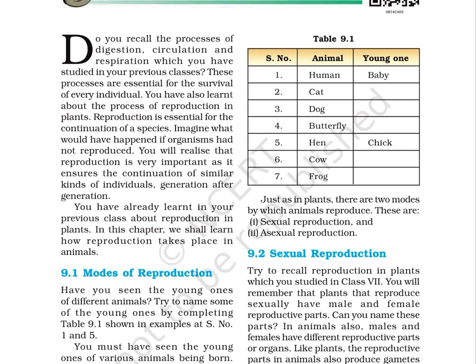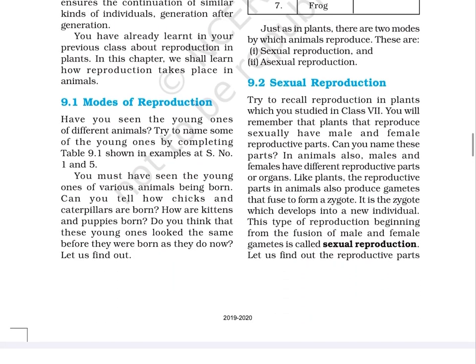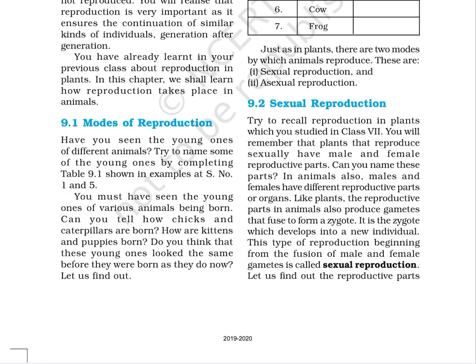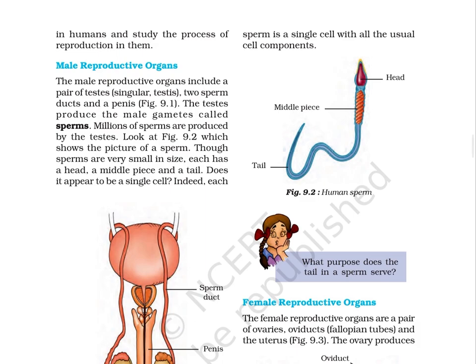Just as in plants, there are two modes by which animals reproduce. These are: first, sexual reproduction, and second, asexual reproduction. 9.2 Sexual Reproduction. You will remember that plants that reproduce sexually have male and female reproductive parts. In animals also, males and females have different reproductive parts or organs. The reproductive parts in animals also produce gametes that fuse to form a zygote. It is the zygote which develops into a new individual. This type of reproduction beginning from the fusion of male and female gametes is called sexual reproduction.